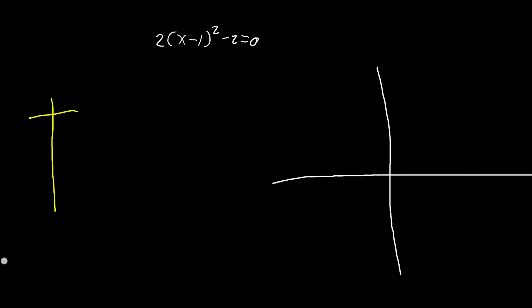Let's have x and y again. We're going to use x values of negative 2, negative 1, 0, 1, and 2. Plugging in x = 0 first: we have 2(-1)² - 2, that gives us 2 - 2 which is equal to 0. So x = 0 is one of our solutions.